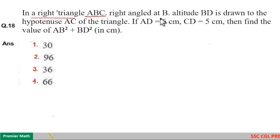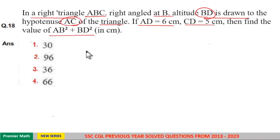In the right-angled triangle ABC, right-angled at B, altitude BD is drawn to the hypotenuse AC of the triangle. If AD = 6 cm, CD = 5 cm, then find the value of AB² + BD² (in cm).